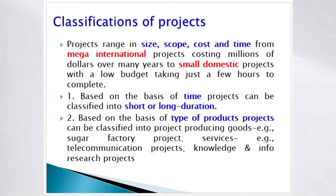Let us see the major classifications of projects. Projects range in size, scope, cost, and time — from mega international projects costing millions of dollars over many years, to small domestic projects with a low budget taking just a few hours to complete. Based on time, projects can be classified into short or long duration. Based on the type of products, projects can be classified into projects producing goods (e.g., sugar factory), services (e.g., telecommunication), or knowledge and information (e.g., research projects).